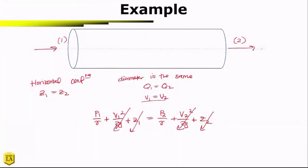We have our horizontal configuration, which means that z1 and z2 cancel. Our velocities are the same, so that cancels our equations. So then what does that mean? If we have a horizontal configuration and we have no change in the pipe diameter, that just means that p1 is equal to p2. That's it.